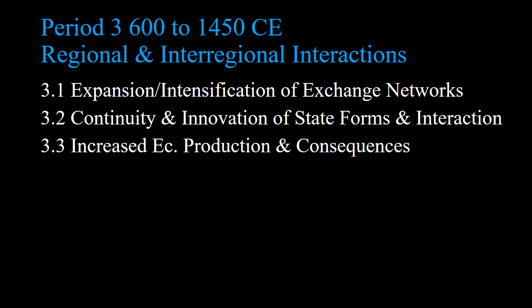We have three subunits to Unit 3, covering 600 to 1450. First, we're going to look at trade and how there's just more trade — same as earlier units with the Silk Road and all that, but now there's more of it. Then you see new and continuing states getting bigger. And then more production of things and consequences.